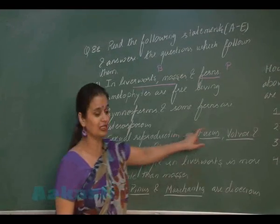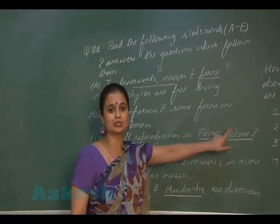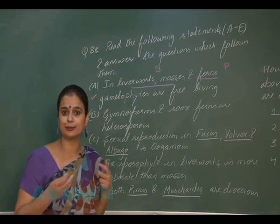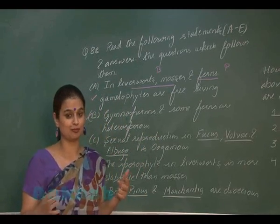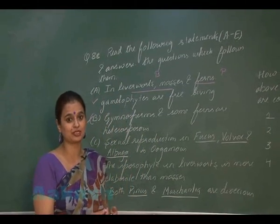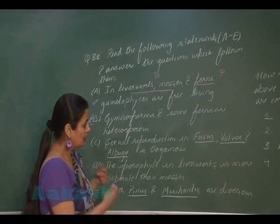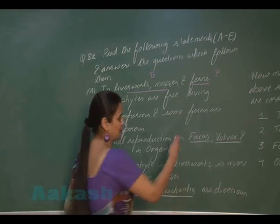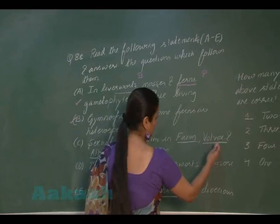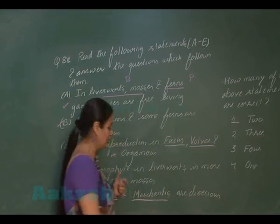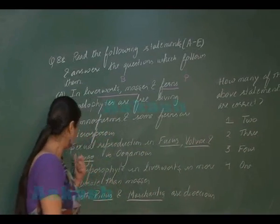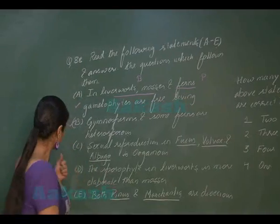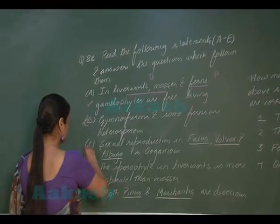Option C: sexual reproduction in Fucus, Volvox, and Albugo is oogamous — the most advanced type of reproduction is present in all three. Fucus and Volvox represent algae, and Albugo is a fungus. So this option is also correct.